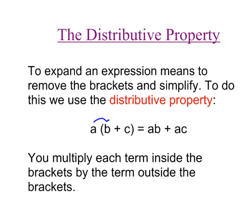So in this case, I would take A times it by B and get AB. Then I would take A and times it by C and get AC. And that's essentially what the distributive property is.